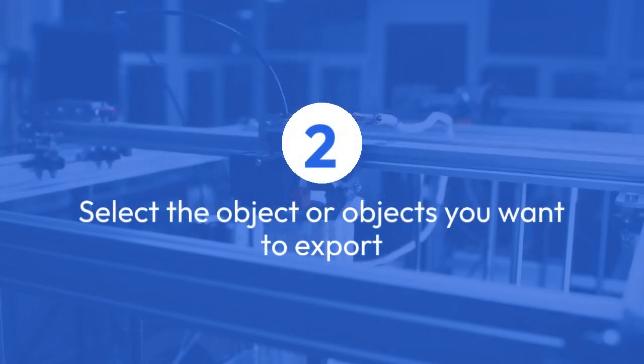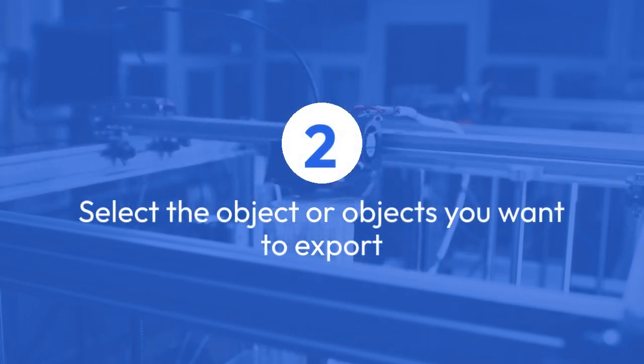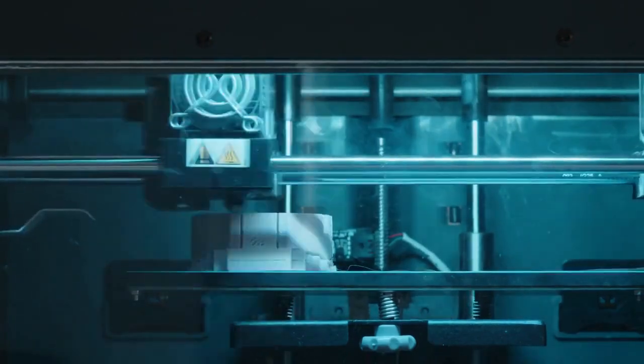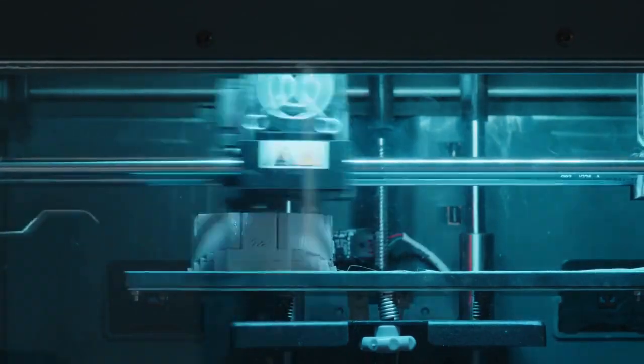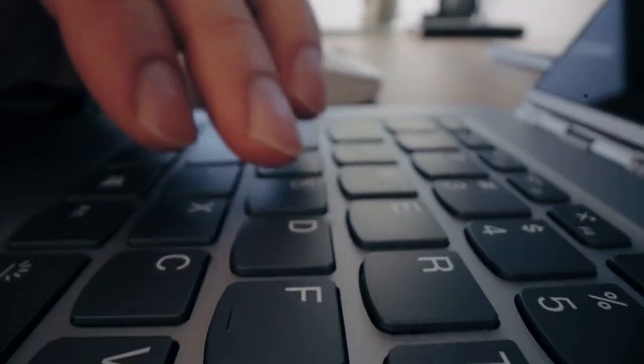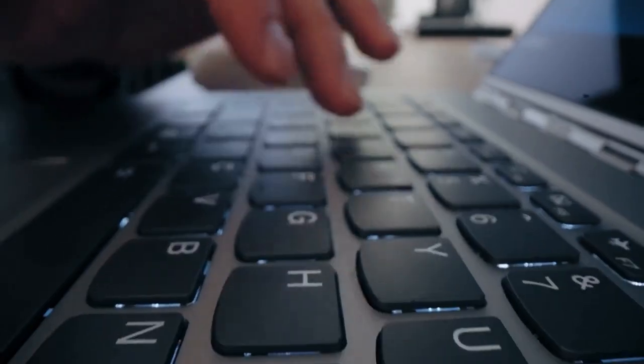Next, select the object or objects you want to export. If you want to export your entire scene, simply select all objects. This can be done using the Select All command in the main menu.